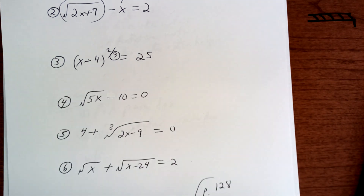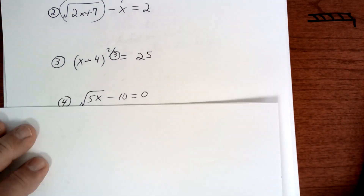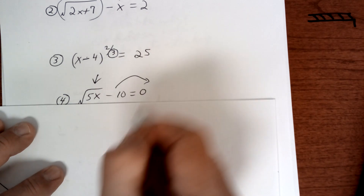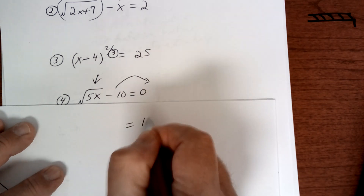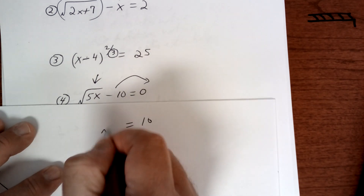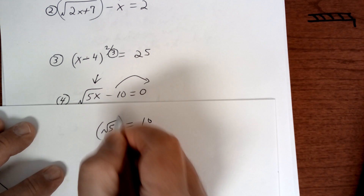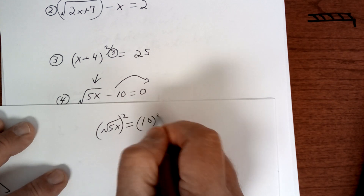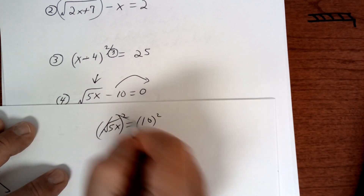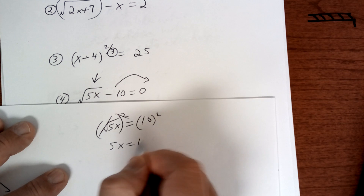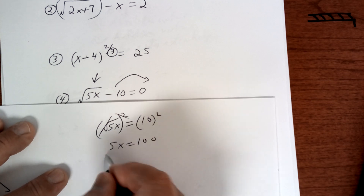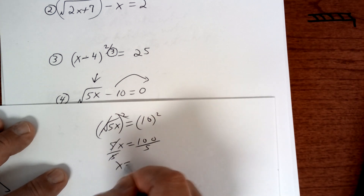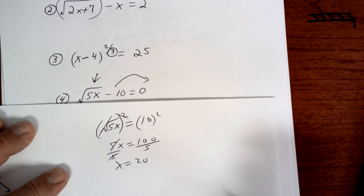This one right here, I would isolate this the same way — move this over. Step one is isolate it, and then square. This cancels, so you get 5x equals 100. Divide by 5, and you get 20. And that should be it.